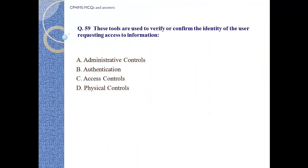Question number 59: These tools are used to verify or confirm the identity of the user requesting access to information. A. Administrative controls. B. Authentication. C. Access controls. D. Physical controls.